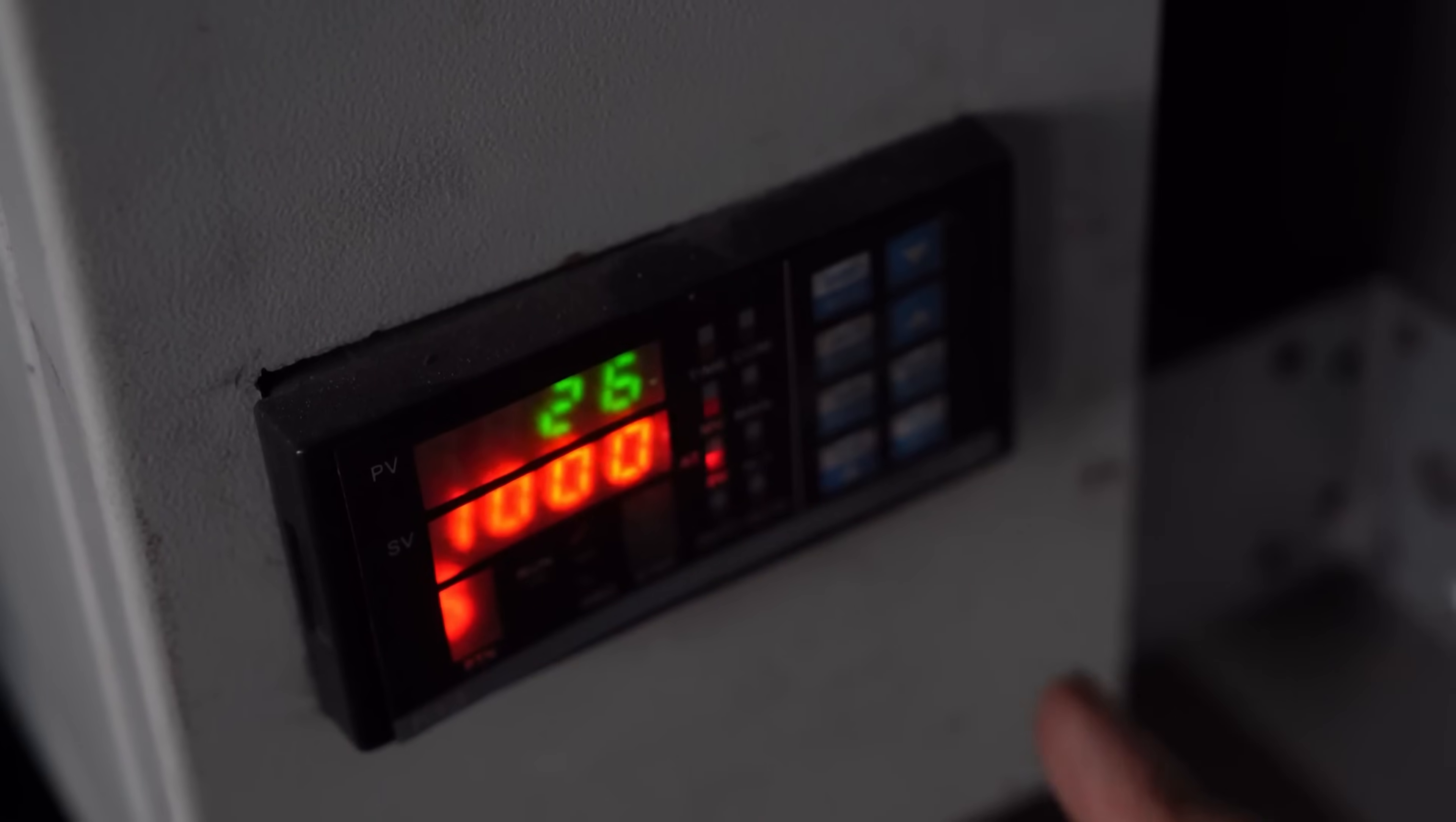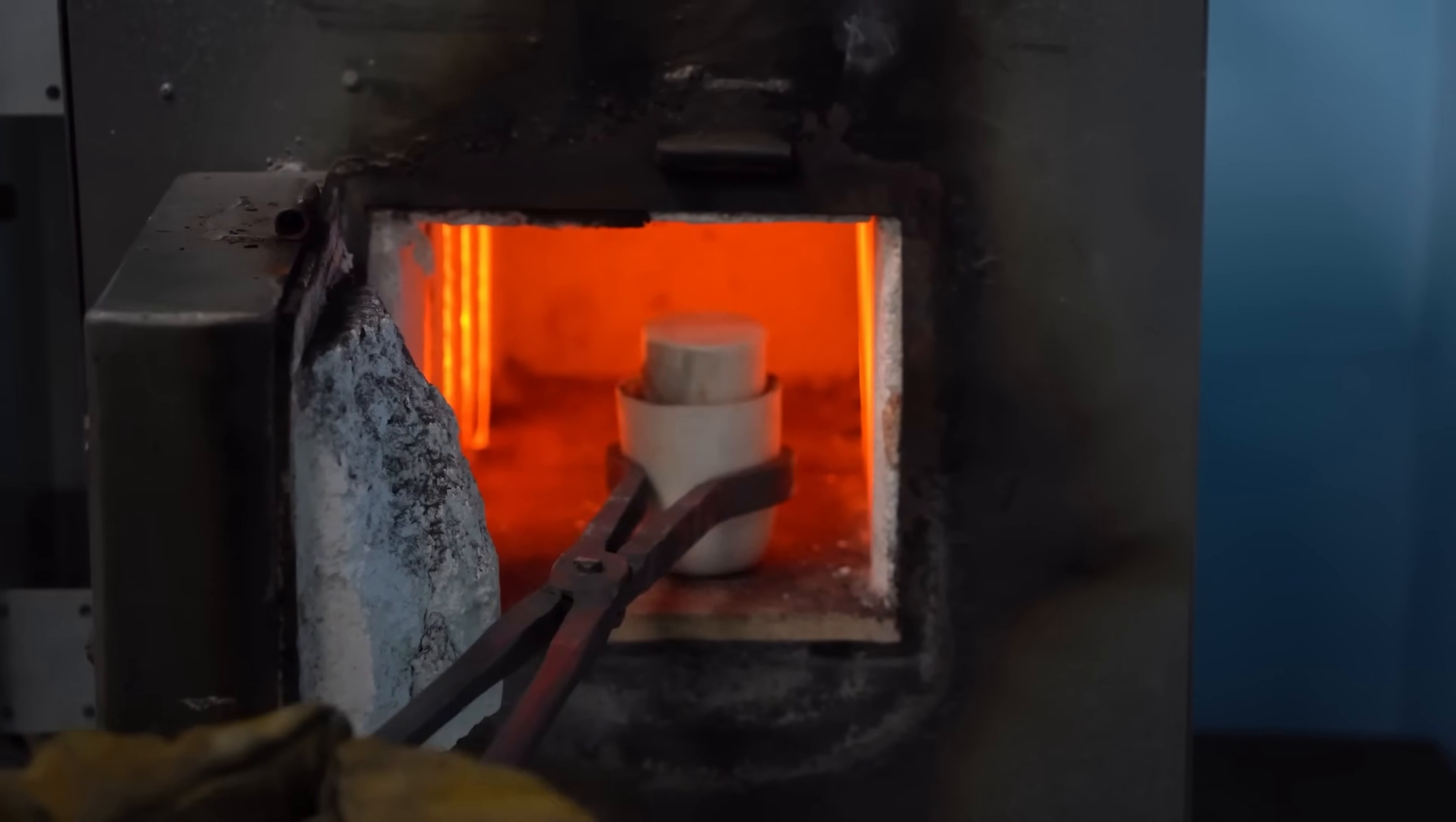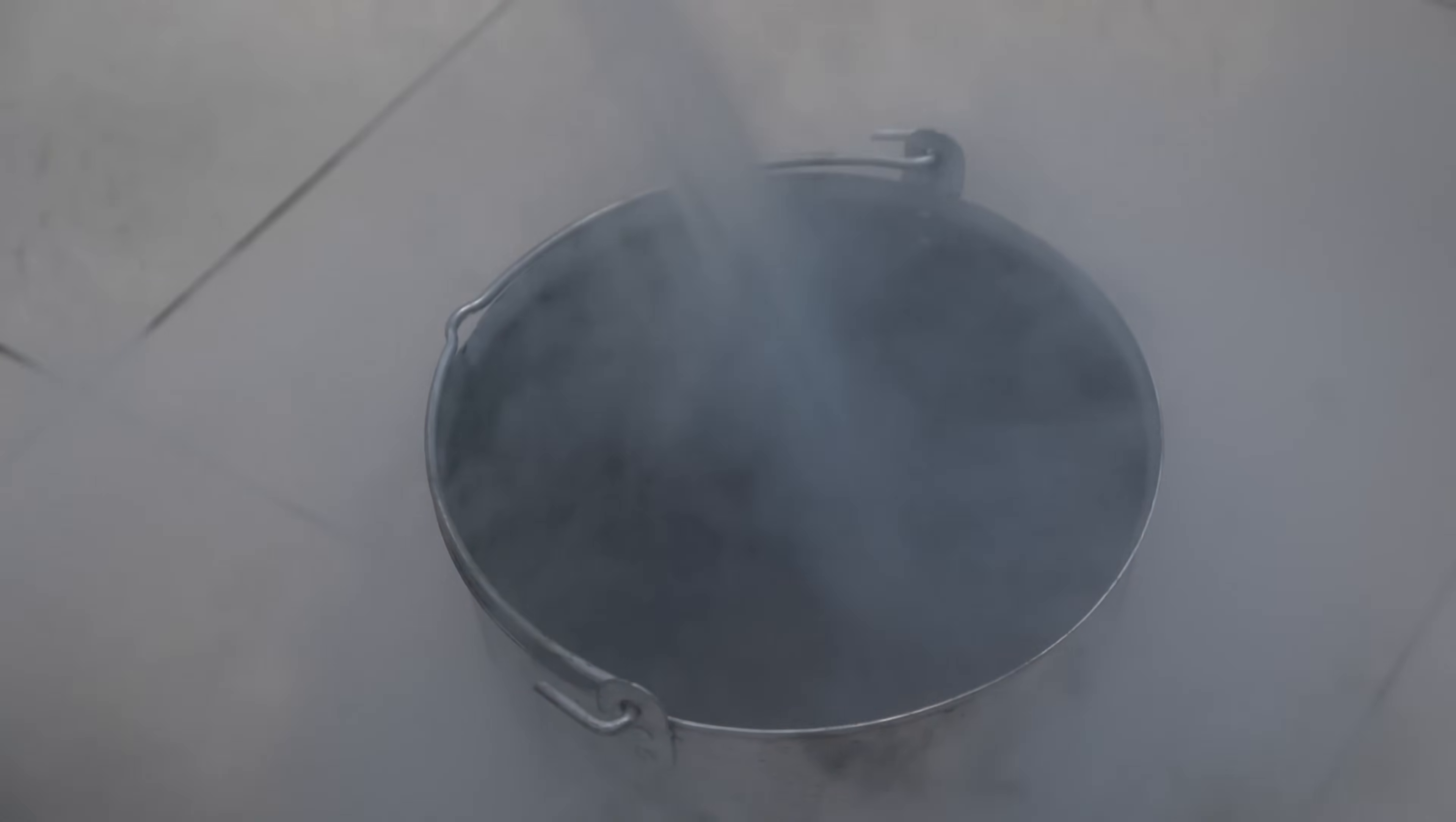To extract iron from the tablets, the crucible is put in a muffle furnace heated to 1800 degrees Fahrenheit, in which it is calcined for one hour. In the last 10 minutes of calcination, the researchers prepare liquid nitrogen, which will cool the crucible with its contents and prevent the tablets from oxidizing in the air, because if this happens, the whole experiment will be ruined.